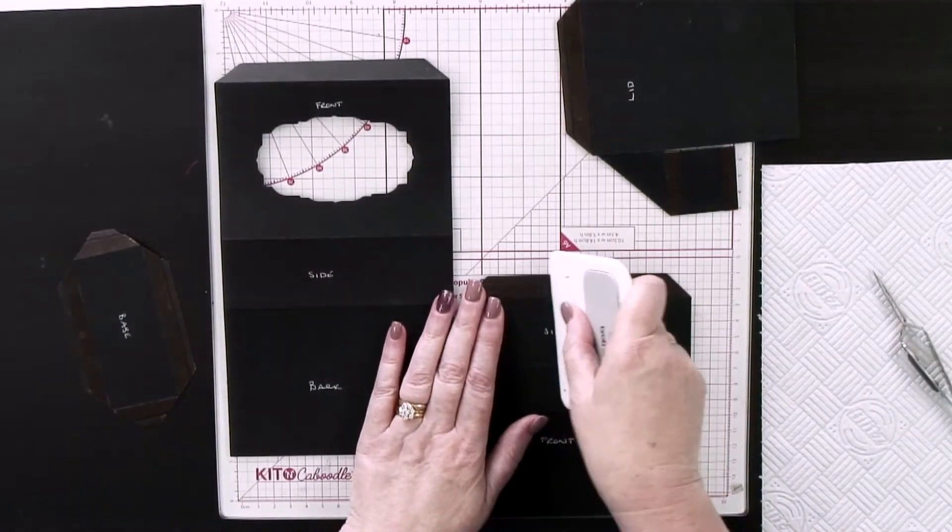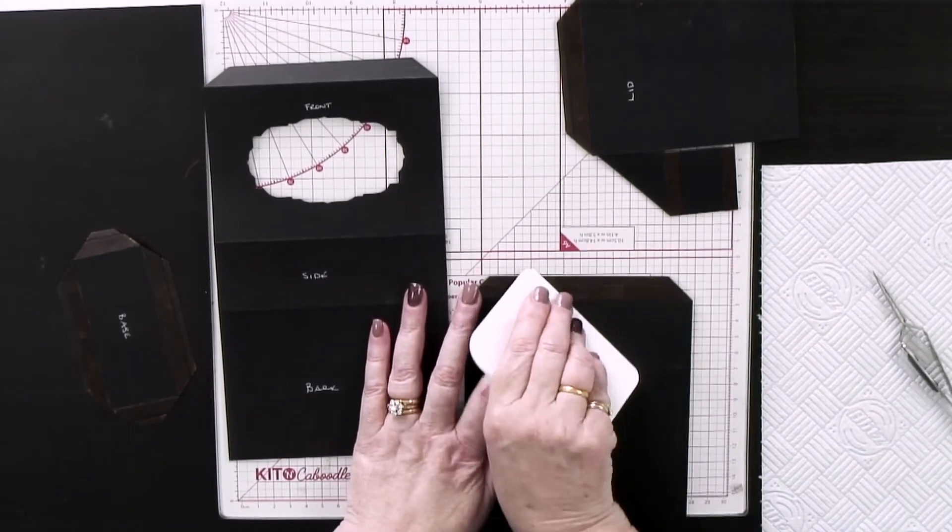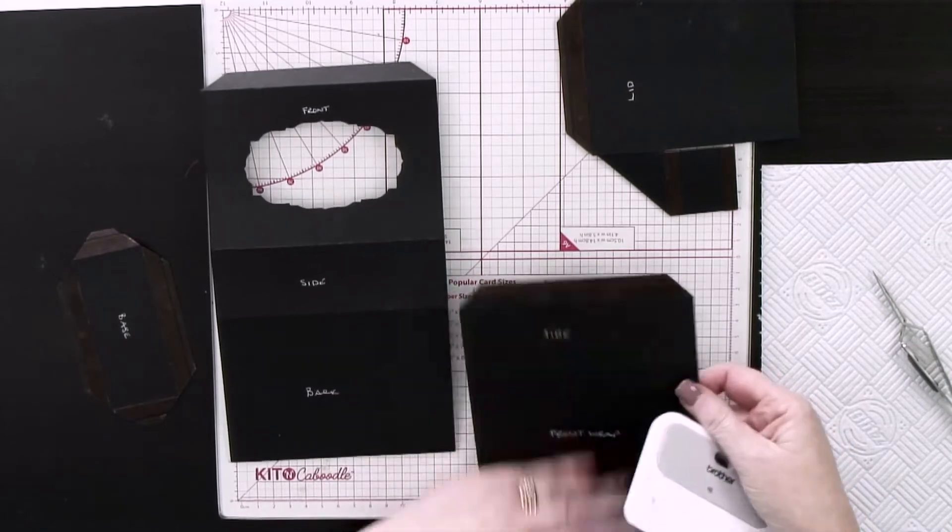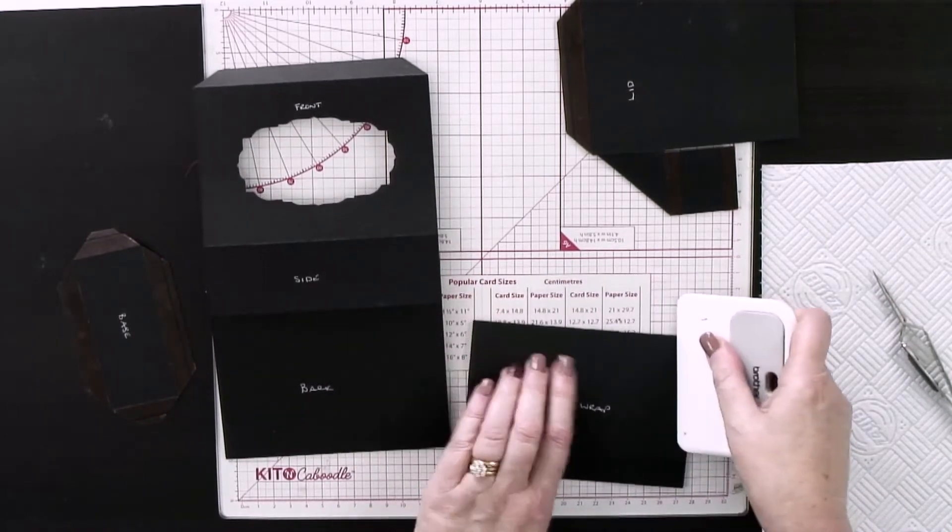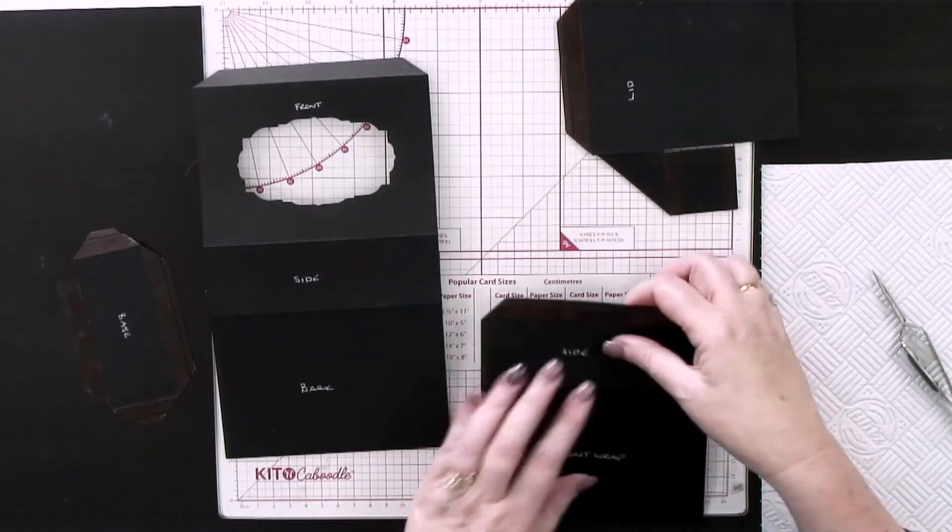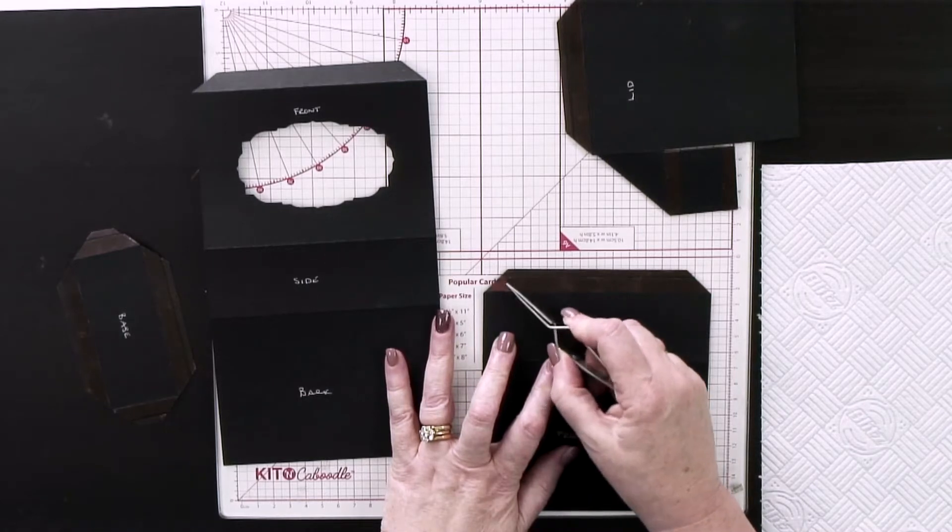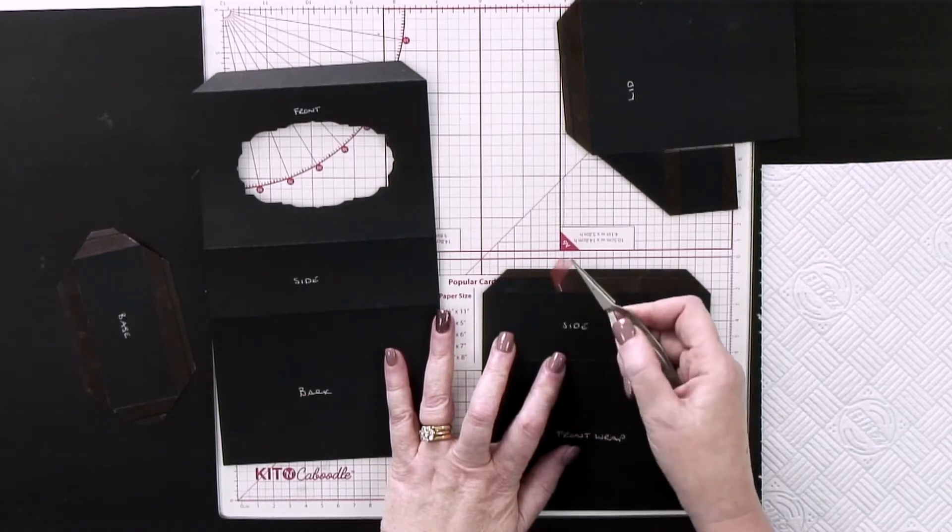As I folded the score lines and put the red liner tape on, I then took my scraper and I burnished that red liner tape down and I also burnished the score lines. I use this tool a lot.